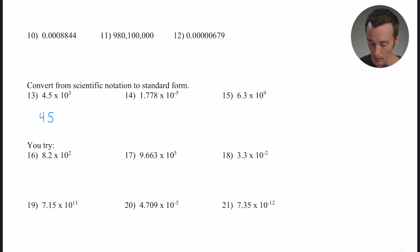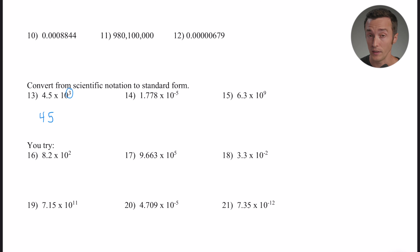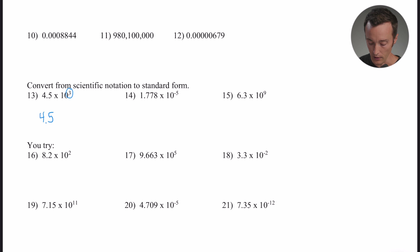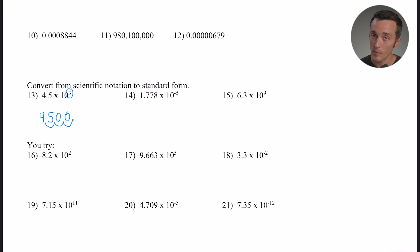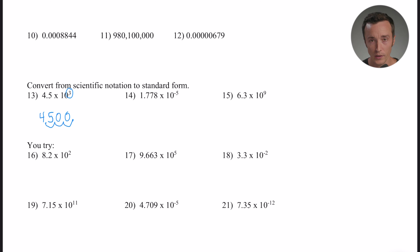For number thirteen, I've got 4.5 times 10 to the third. I need to move the decimal three places — that's what the exponent tells me. Since it's a positive exponent, the final answer will be a big number, so I move the decimal to the right: one, two, three. Fill in the blank spots with zeros as placeholders, and the answer is 4,500. If you'd accidentally gone left, you'd get a tiny number — that would signal something went wrong.